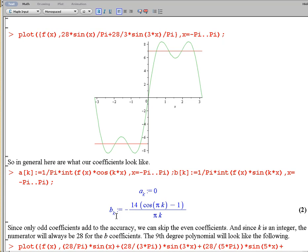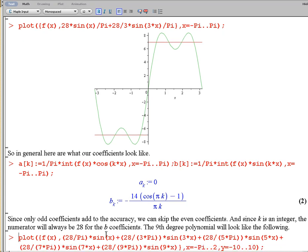We see that our b sub k's are all going to have this form here. Now, since k is an integer, cosine is always going to be some integer, we're always taking the cosine of some integer multiple of pi. Cosine of pi is negative 1, cosine of 2 pi is 1, so on and so forth. So what's going to happen is, it's going to oscillate between 0 and 28 for the b coefficients.